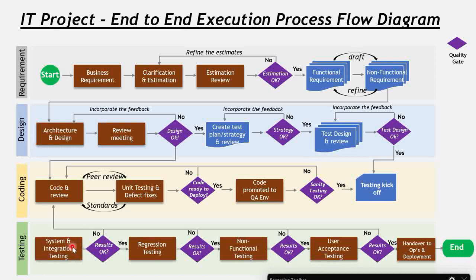Moving to the testing phase: we have system testing and integration testing sequentially. If results are okay for system and integration, it moves to regression; if not, defects are fixed first. In regression testing, if results are okay we move to non-functional testing; if not, defects are fixed. Non-functional testing covers performance, volume, and related checks. If everything looks okay, we move to UAT — user acceptance testing. If not, defects are fixed.